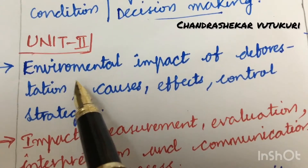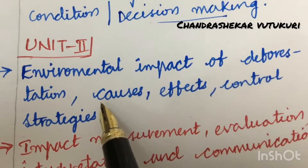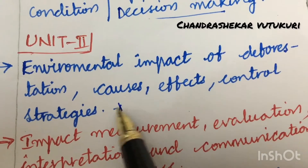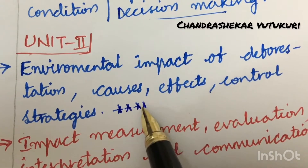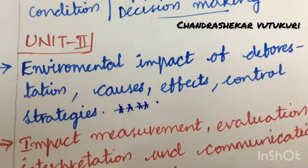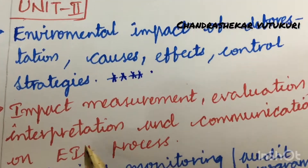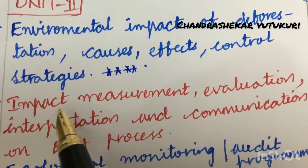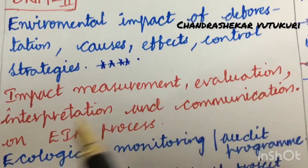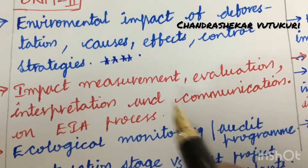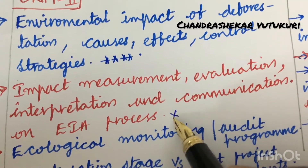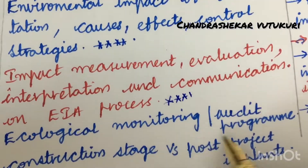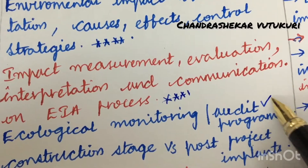The environmental impact of deforestation and its causes, effects and control strategies may be a very important gunshot question. Sometimes they will ask in a 7/8 split or directly as a 15-mark question. The impact measurement, evaluation, interpretation, and communication in the EIA process is also very very important and has been asked several times.